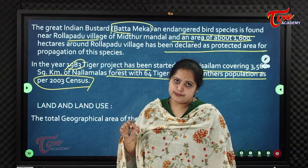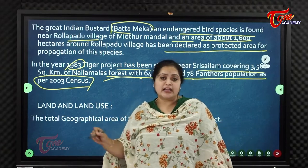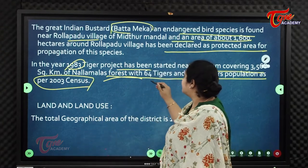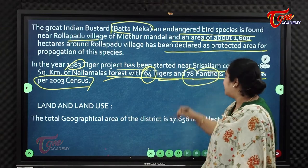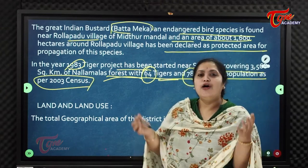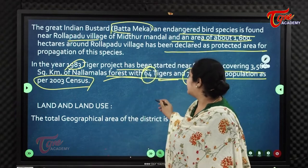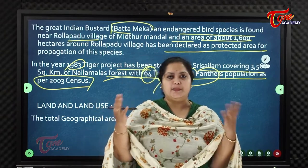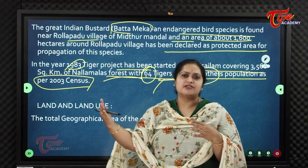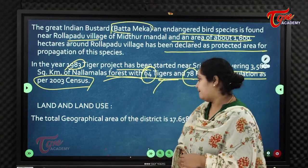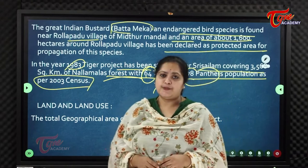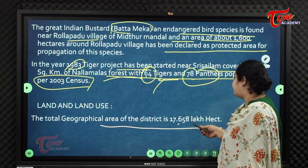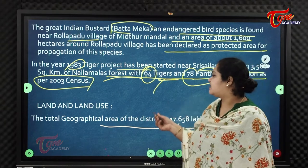According to the 2003 census, the Nallamala forest had 64 tigers and 74 panthers. Project Tiger was established to protect and preserve these species. The total geographical area of Karnool district is 17.658 lakh hectares.